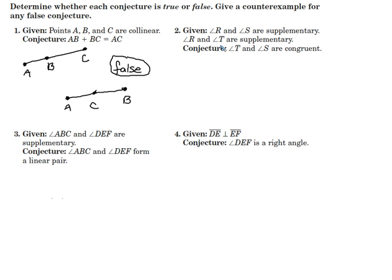For number two, given angle R and S are supplementary and R and T are supplementary, we're going to conjecture that T and S are congruent. Well, let's see here. Let's say angle R, let's say that is 90 degrees.